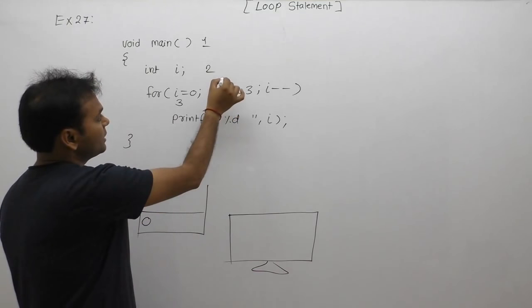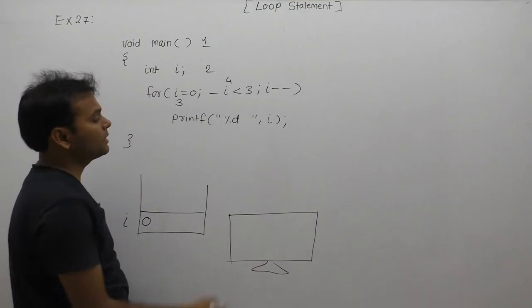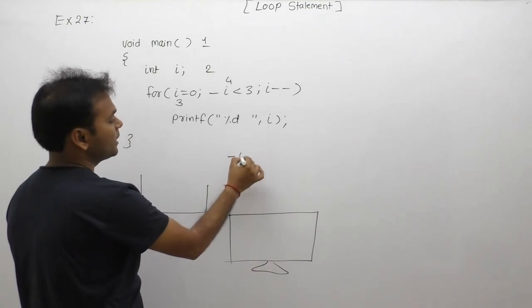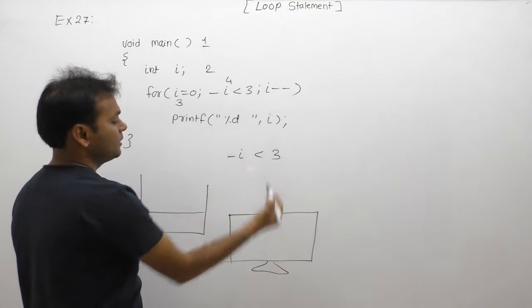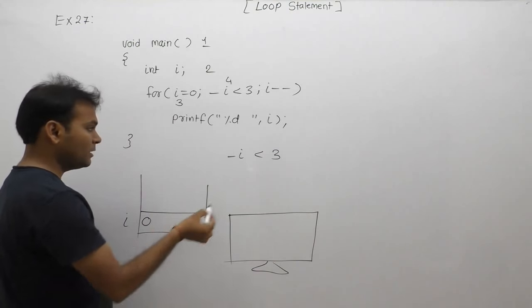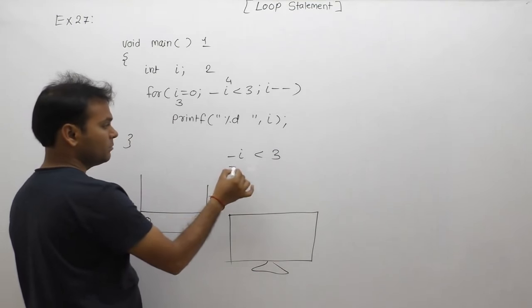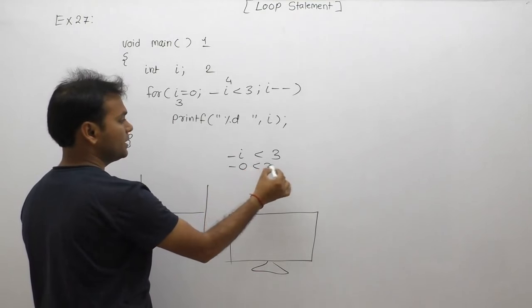Fourth case, in fourth case we perform condition testing. In the condition, what do we have? -i less than 3. Currently in place of i, i's value decreases. i's current value is 0, means it becomes -0 less than 3, condition is true.